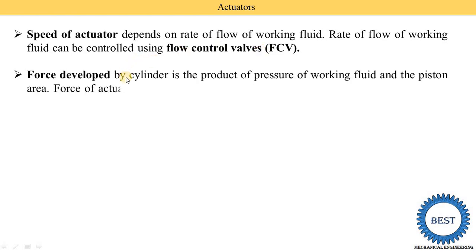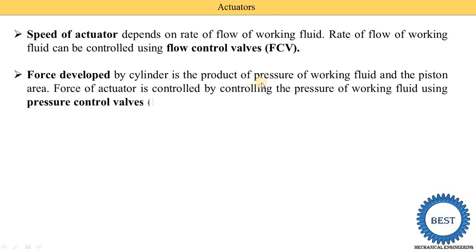The force developed by the cylinder is the product of the pressure of the working fluid and the piston area — force equals pressure multiplied by area. The area of the actuator is fixed and we do not change it, so we have only one option: to change the pressure. For changing the pressure we use pressure control valves, abbreviated as PCV. The force of the actuator is controlled by controlling the pressure of the working fluid using the pressure control valve.